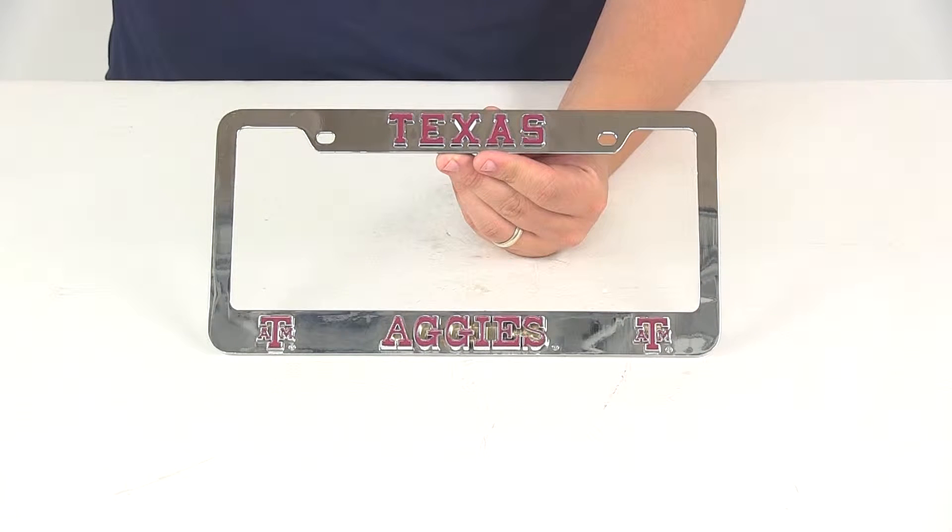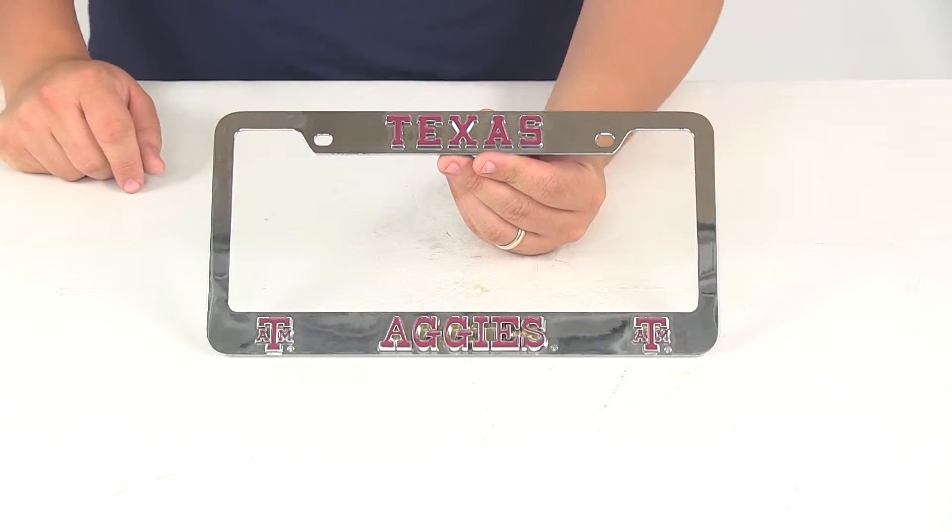Today we're going to be taking a look at part number CTF 328. This is the Texas A&M Aggies 3D Collegiate License Plate Tag Frame.